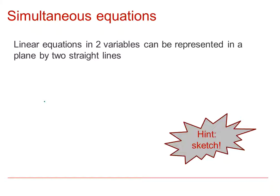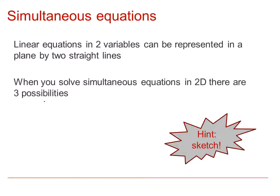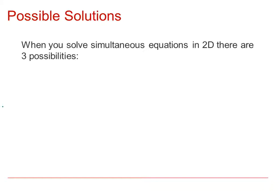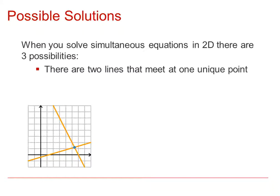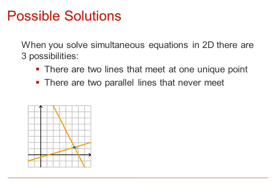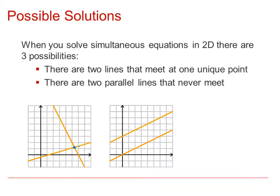If you've got linear equations in two variables, these can be represented in a plane by two straight lines. When you solve simultaneous equations in two dimensions, there are three possibilities. Pause the video and see if you can draw the different possibilities. The first case is two lines that meet at one unique point, as you can see on this diagram — if two lines have a different gradient, they will meet at a unique point. The second case is two parallel lines that never meet.